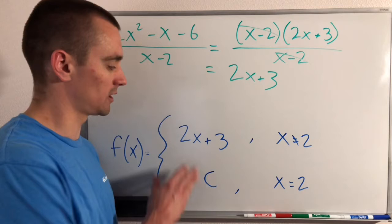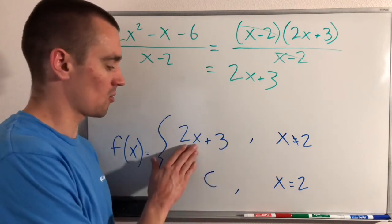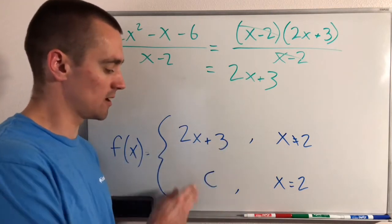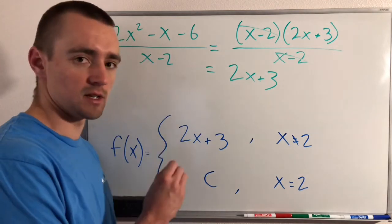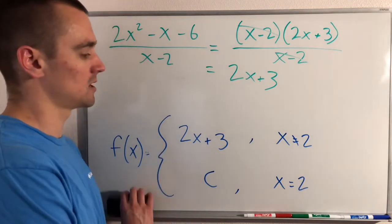So to do that, all we really need to do is figure out what the value of this function is when x equals 2, and then put c to be that value so that it fills in the hole.